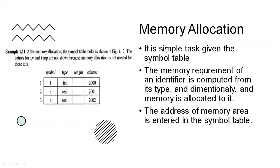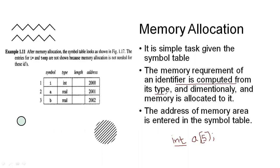Memory allocation is a simple task given the symbol table — the symbol table is essential for memory allocation. Memory requirement of an identifier is computed depending on the type and the length of the symbol. For example, for int a, the type is int and the length is 1. But for a[5], the type is still int but the length is 5. So memory requirement of an identifier is computed from its type and dimensionality.